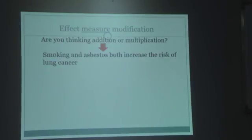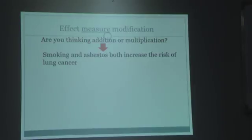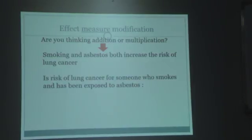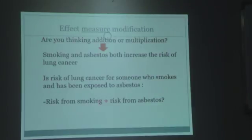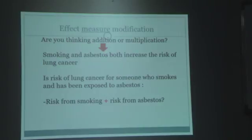When we talk about effect measure modification, there is always the question of scale—additive or multiplicative. Smoking and asbestos both increase the risk of lung cancer. We start with addition: we add the risk of smoking to the risk from asbestos, since each contributes to causing lung cancer. If the combined risk is above the expected additive effect, then there is effect measure modification—there is interaction, or synergism, and it is on the additive scale.